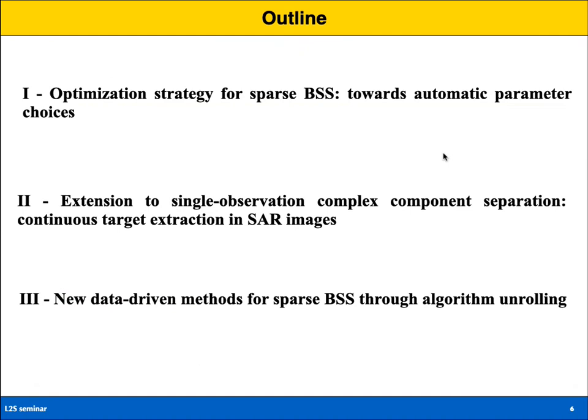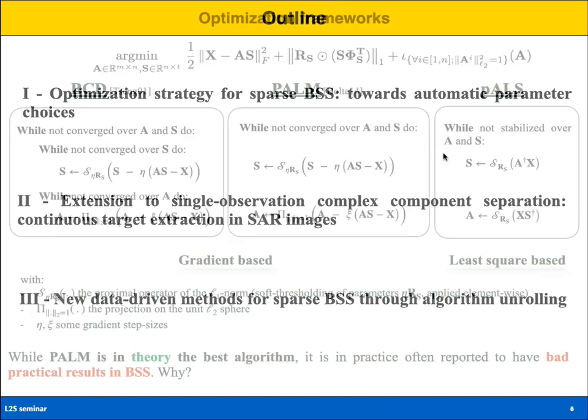The talk is divided into three parts. First, we will explain more precisely the problem of parameter tuning and present a heuristic for automatically finding hyperparameters in blind source separation. Then we will cover an extension to background-target separation in SAR images — a blind source separation problem with complex images. Finally, we will discuss more recent work using deep learning to propose a neural network for sparse blind source separation.